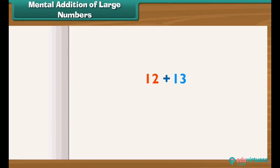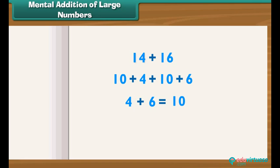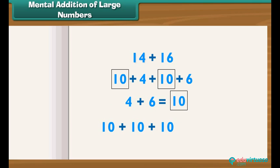Let us use a different technique for mental addition of two large numbers. We break each number into tens and ones and then add. Write 14 plus 16 as 10 plus 4 plus 10 plus 6. First, 4 plus 6 equals 10. We now have three tens: 10 plus 10 plus 10 equals 30.